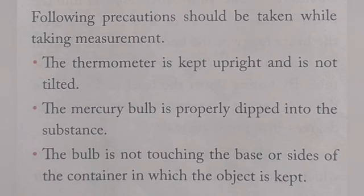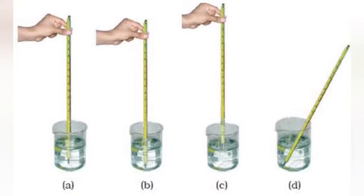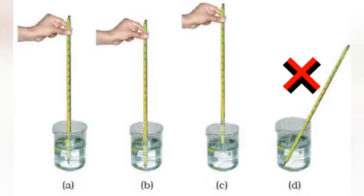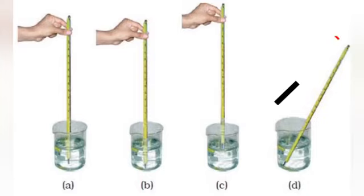Here are some precautions to follow while doing a measurement with the laboratory thermometer. First, the thermometer should be kept upright as shown in pictures A, B, and C, and should not be tilted as shown in picture D. Secondly, the mercury bulb should be properly dipped into the substance or liquid as shown in picture A. Third, the bulb should not touch the base or the sides of the container in which the substance or liquid is kept.